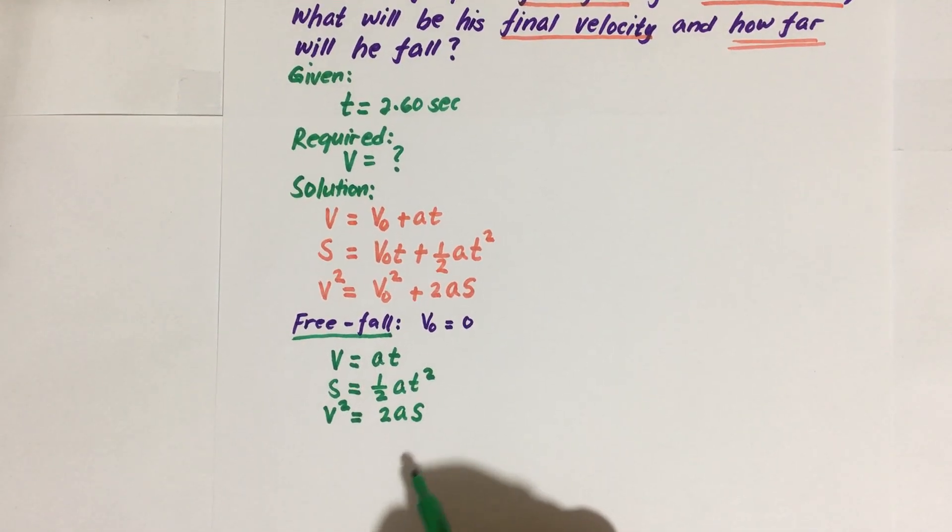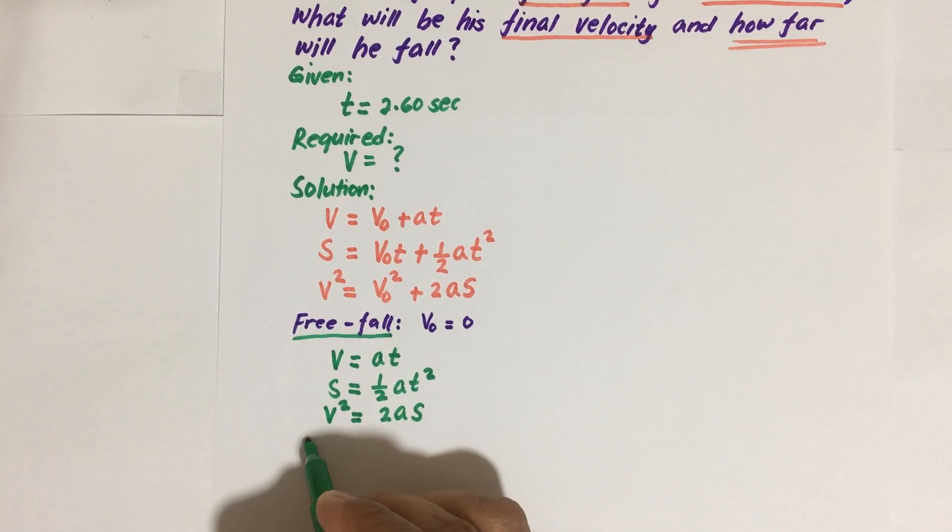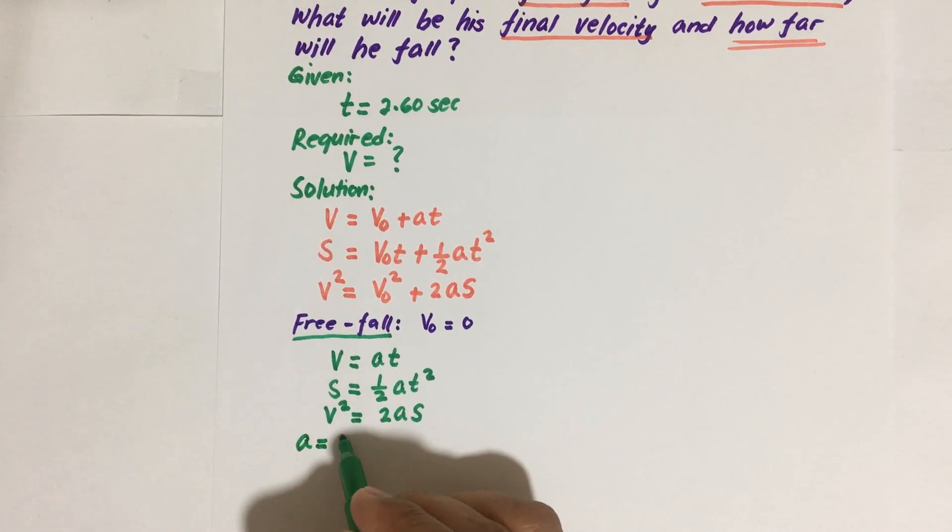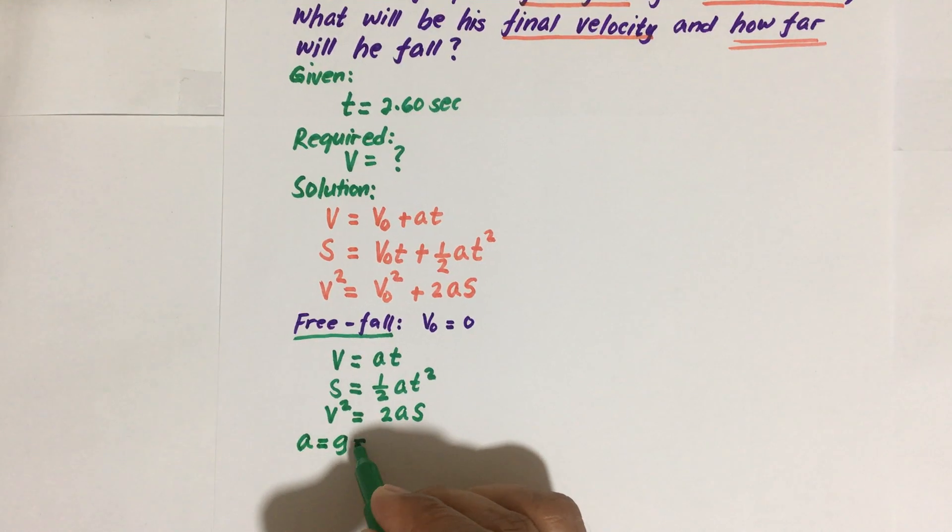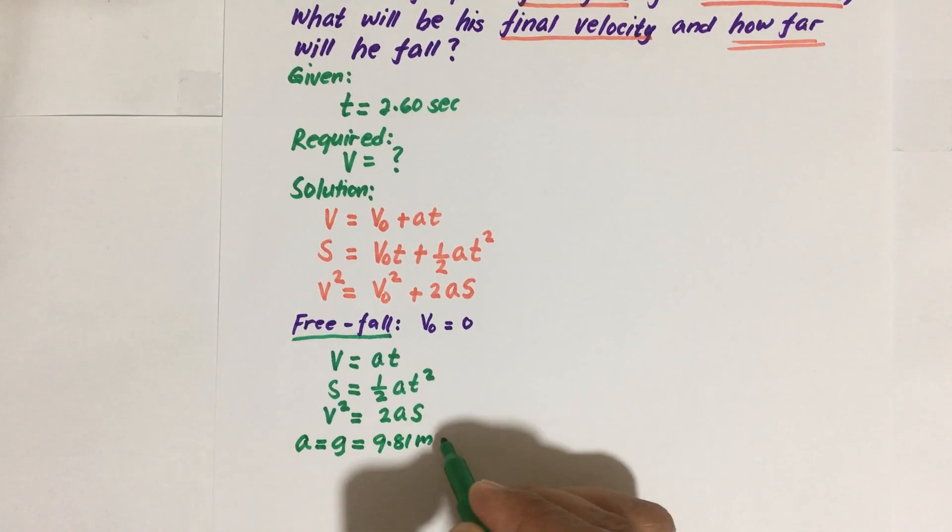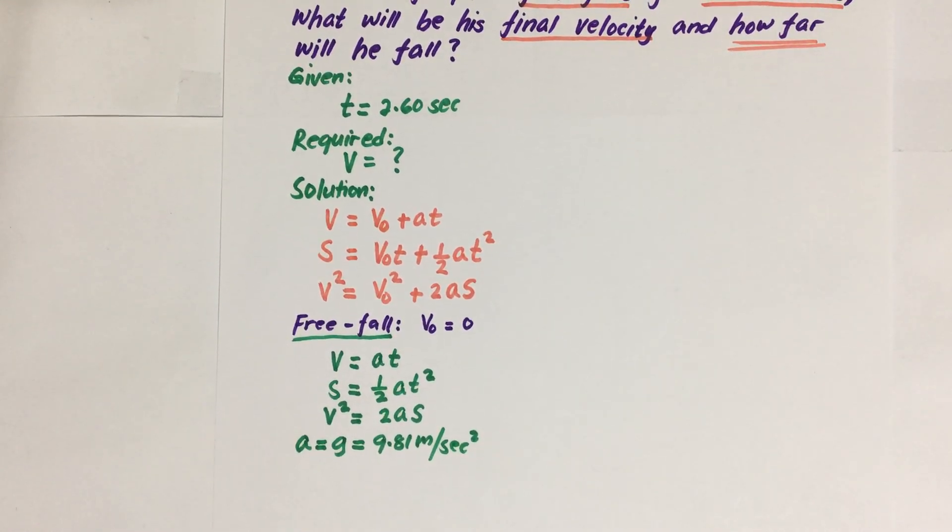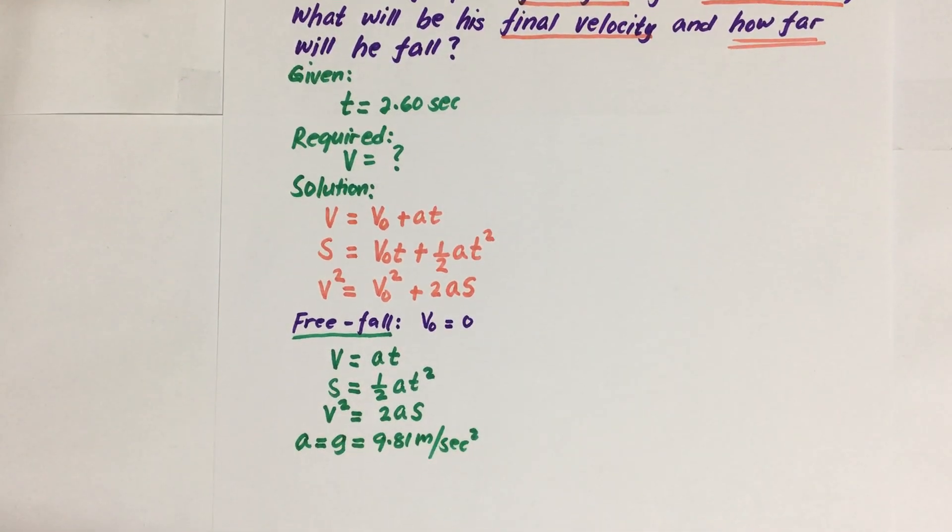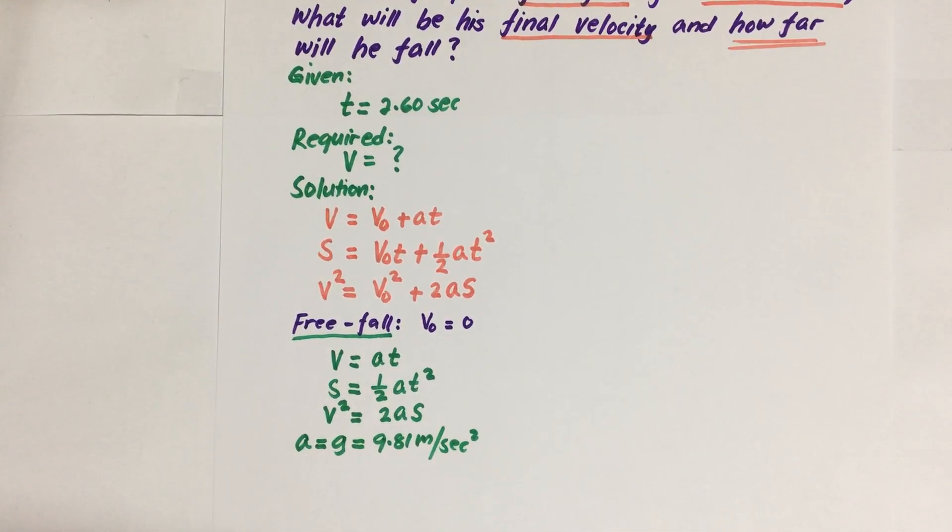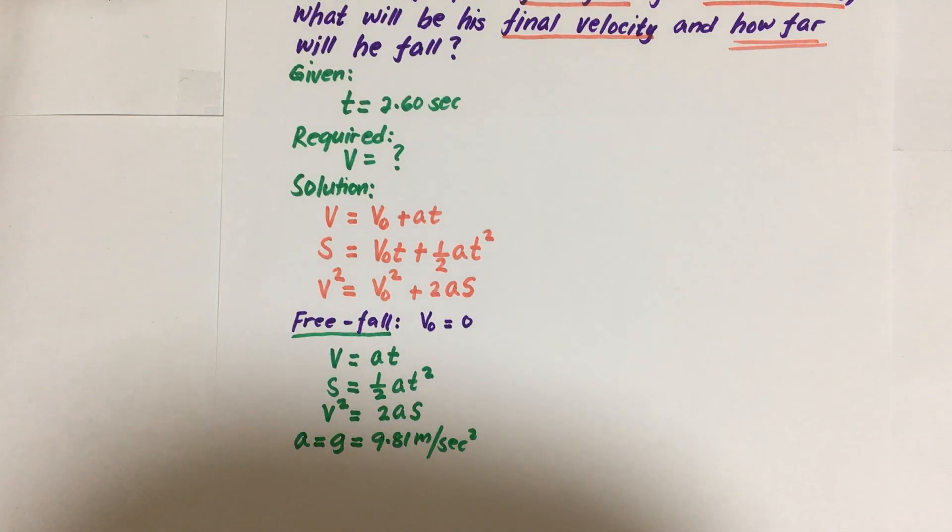Okay, so take note on the difference, class. Now we are going to use the gravitational acceleration, meaning our acceleration, gravitational acceleration, is equal to g, which is equal to 9.81 meters per second squared. So we have to use this constant for our free fall.